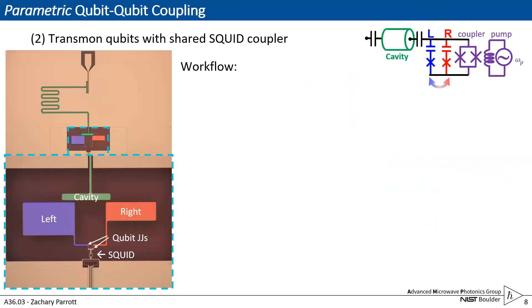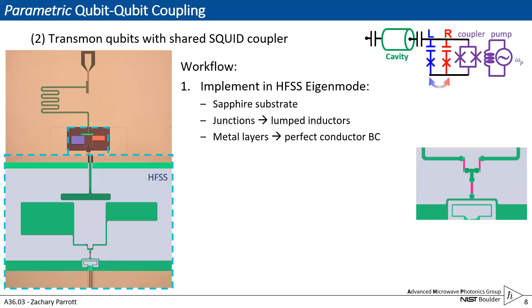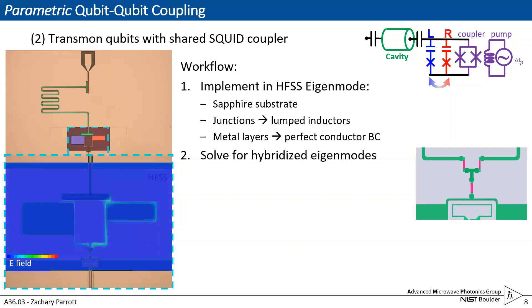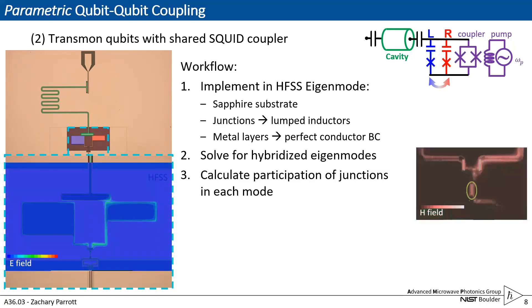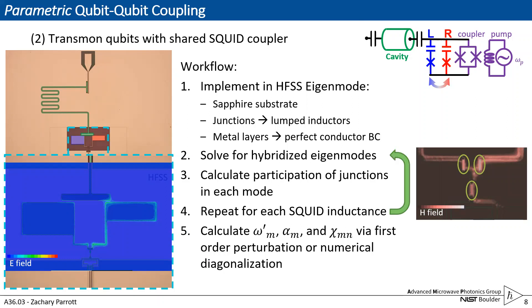We'll look at the two experiments I highlighted that demonstrate this parametric platform. Here we have two largely transmon qubits with a shared SQUID coupler that are also capacitively coupled to a cavity for readout. We send this over to HFSS where it's put on a sapphire substrate, the junctions get modeled as lumped inductors, and the metal layers go in as perfect conductor boundary conditions. We can then run the eigenmode simulation and see how the energy is localized to the junctions for a given mode, repeating this for each value of the SQUID inductance.